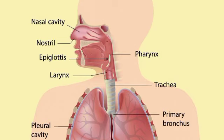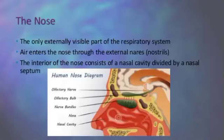There are various organs of the respiratory system which play a vital role in respiration. These are: nose, pharynx, trachea, bronchi, diaphragm, and lungs.